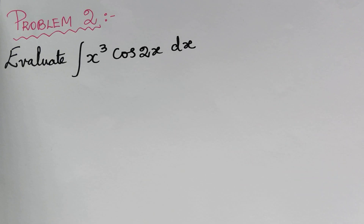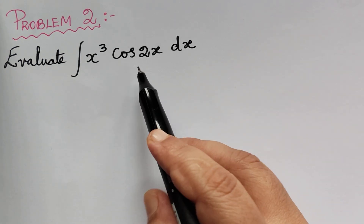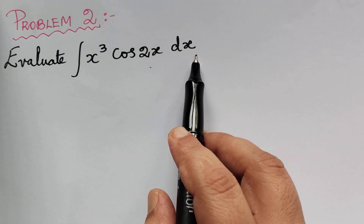Dear students, under the topic Bernoulli's formula under integration, here we have problem 2. In our previous video lecture we have solved problem 1. Now here we are going to solve the second problem. The question is: evaluate the integral of x to the power 3 times cos 2x dx.